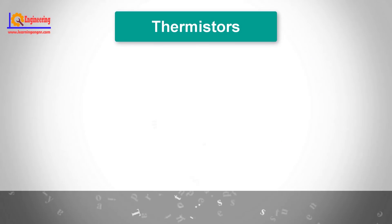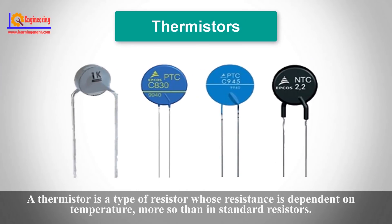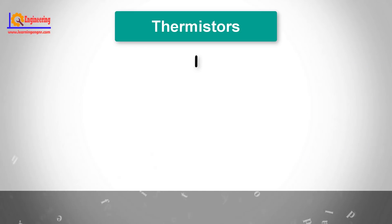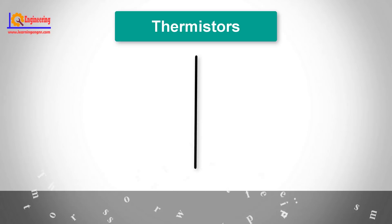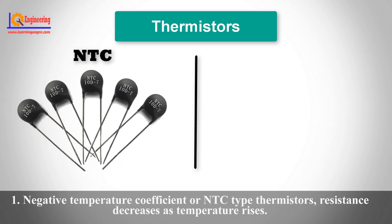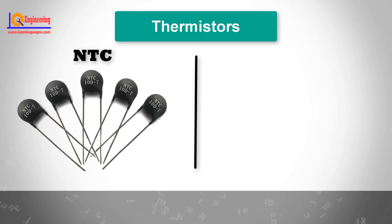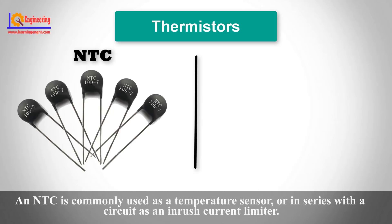A thermistor is a type of resistor whose resistance is dependent on temperature more so than standard resistors. Thermistors are of two opposite fundamental types. The first is Negative Temperature Coefficient, or NTC-type thermistors, where resistance decreases as temperature rises. An NTC is commonly used as a temperature sensor or in series with a circuit as an inrush current limiter.